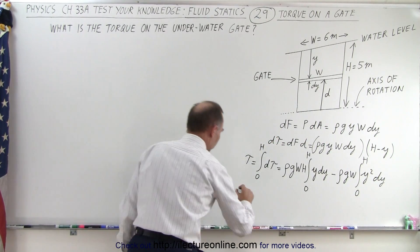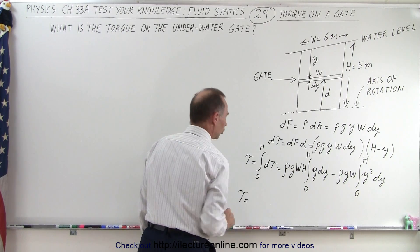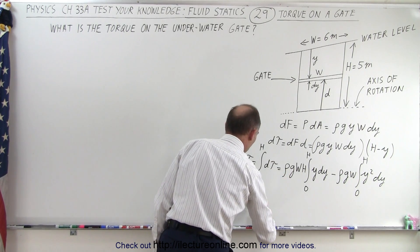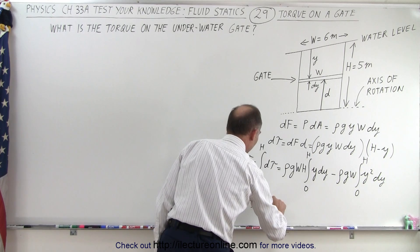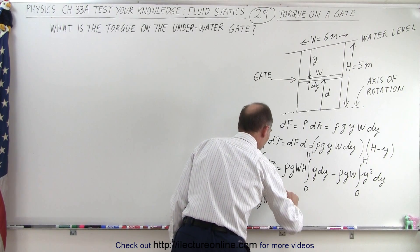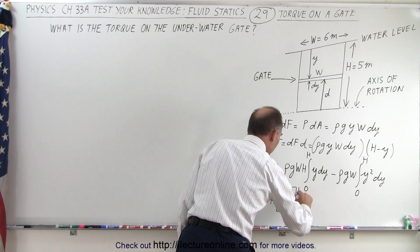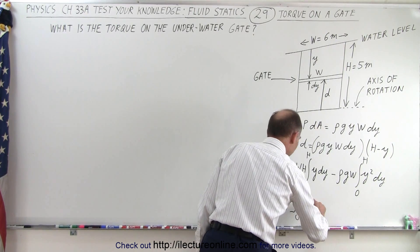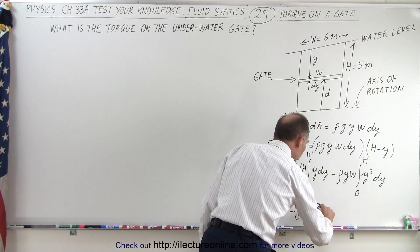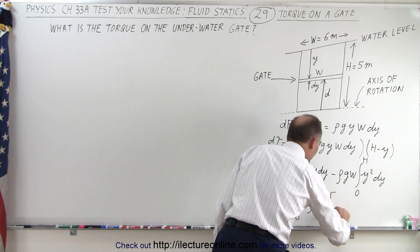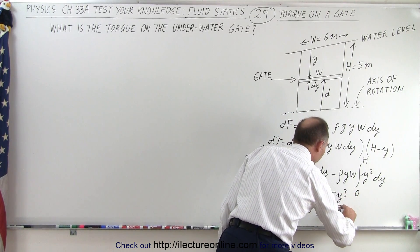So the total torque is equal to ρGWH times Y squared over two evaluated from zero to H minus ρGW times Y cubed over three from zero to H.